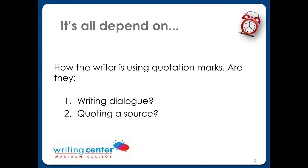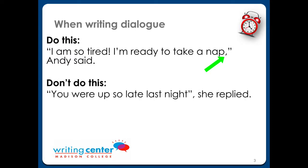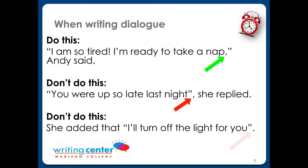Let's look at an example of each of those. Look at this sentence. With dialogue, we put periods and commas inside of the quotation marks. Avoid putting commas incorrectly outside of the quotation mark, as you'll see here in the second sentence. Another mistake to avoid is putting the period outside the quotation marks as well.